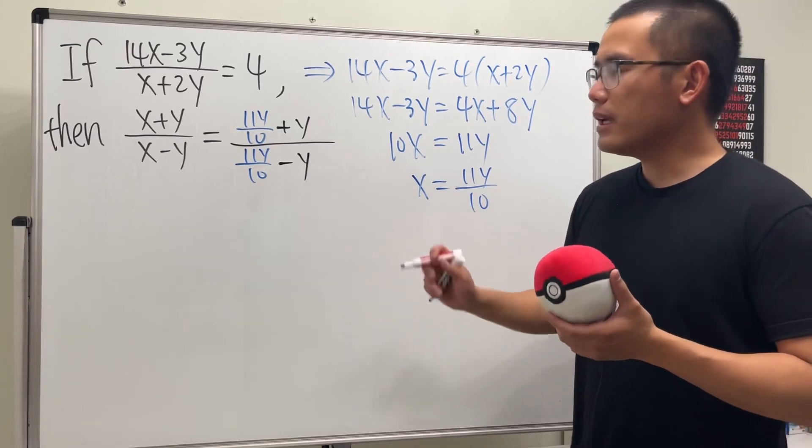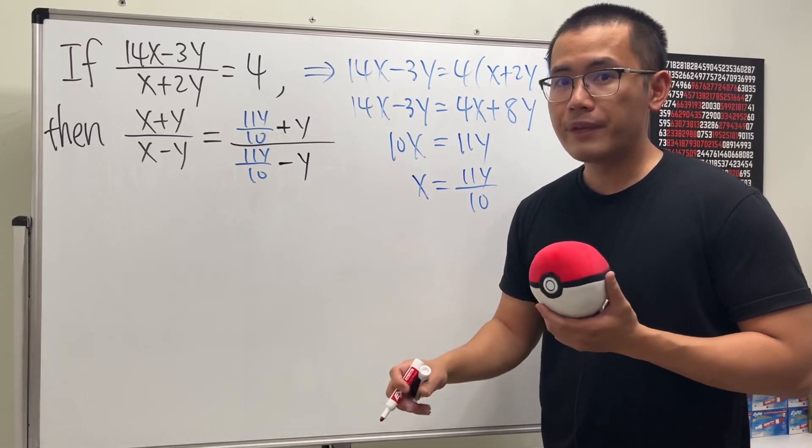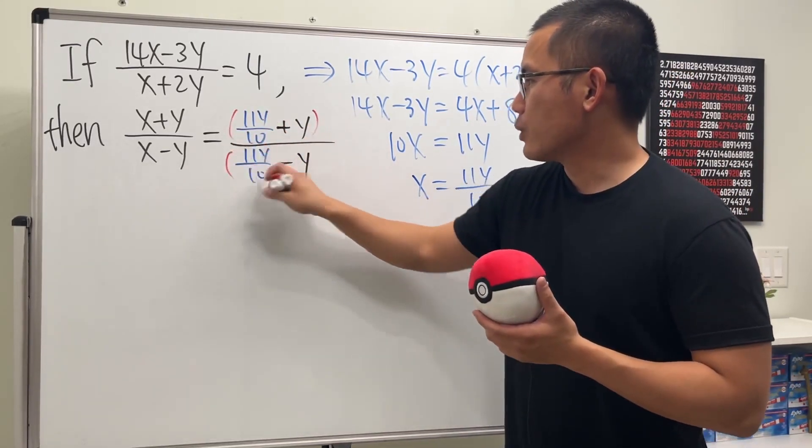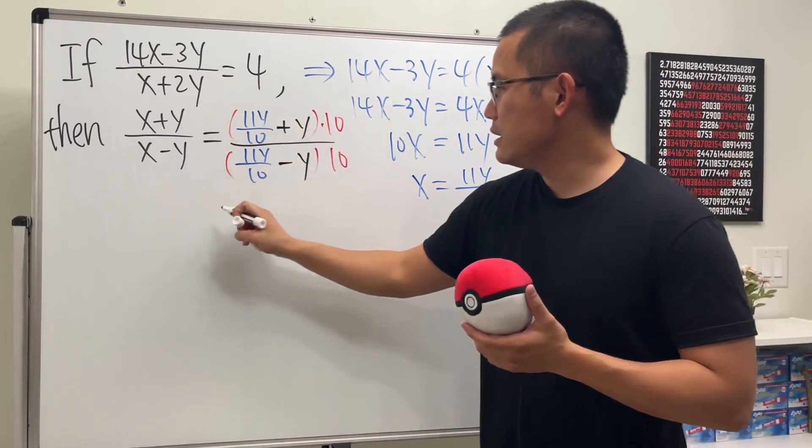And if you don't like complex fractions, because we have the small fraction and the small fraction here, you can just multiply the top and bottom by the denominator, which is just 10. So let's do that.